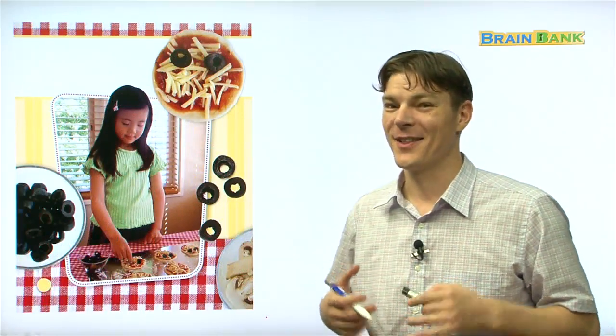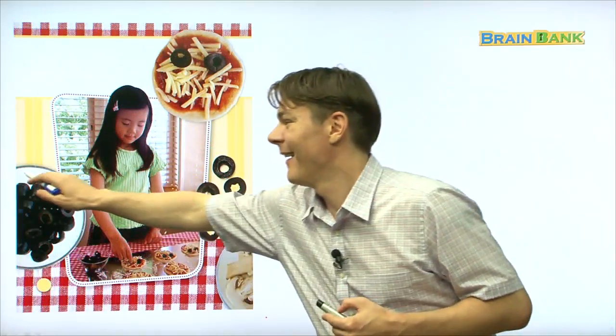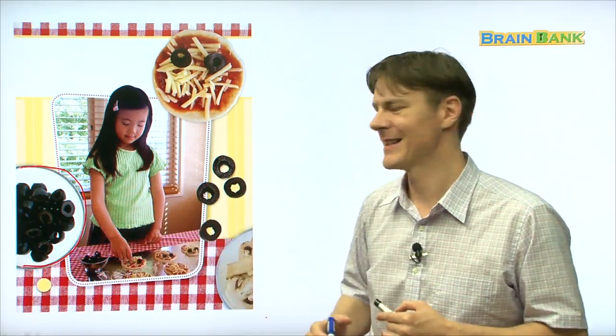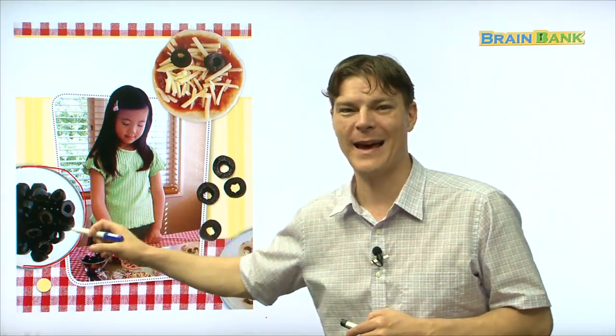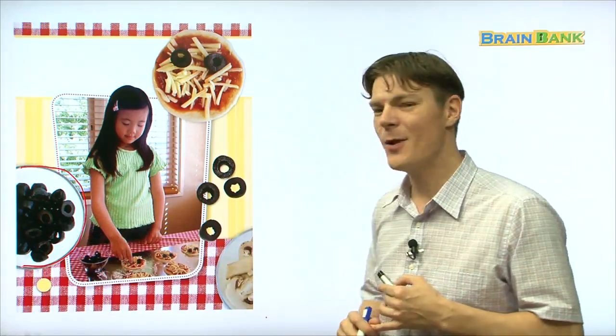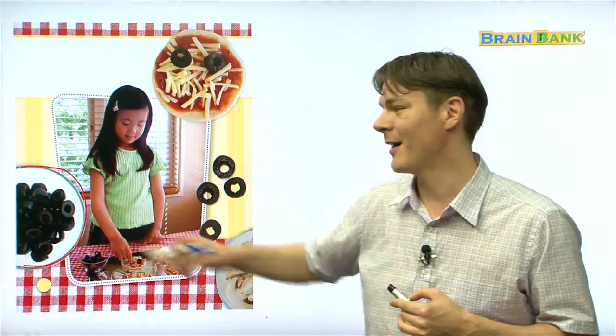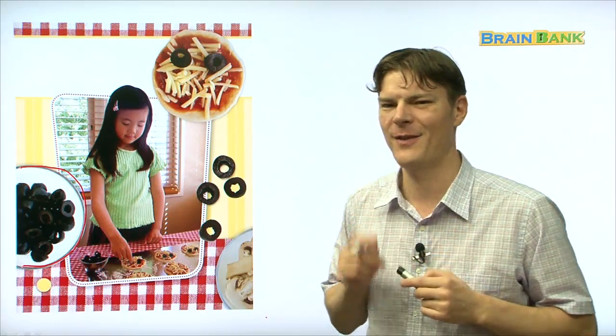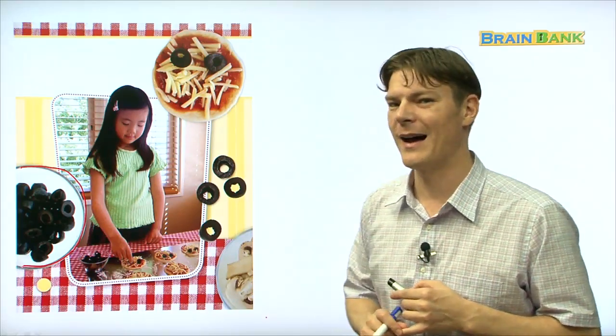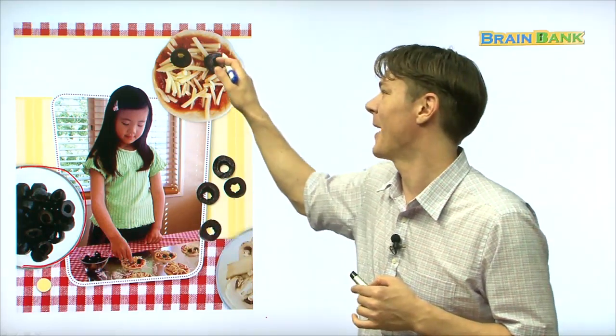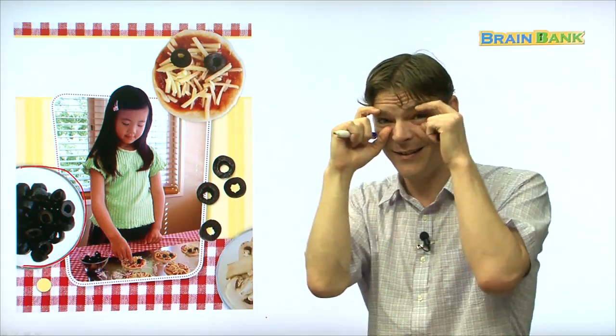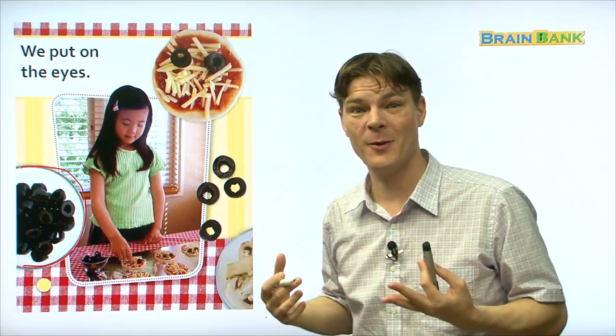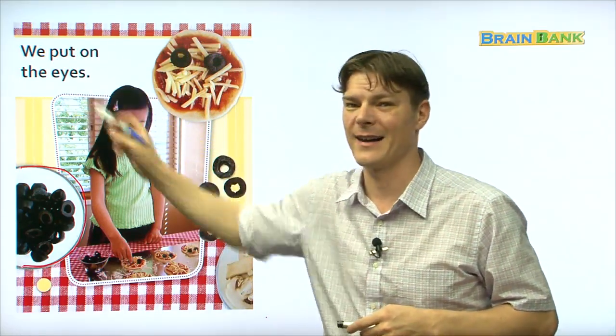So, now the little girl is grabbing what? What are these, boys and girls? These are olives. Right. Black olives. And, have you ever eaten olives? Have you ever tried them? They're very salty. Very, very salty. What is she doing with the olives, I mean. She's putting them up here and they look like eyes. You see that? We put on the eyes. Everyone repeat with me. We put on the eyes. Alright. Great.